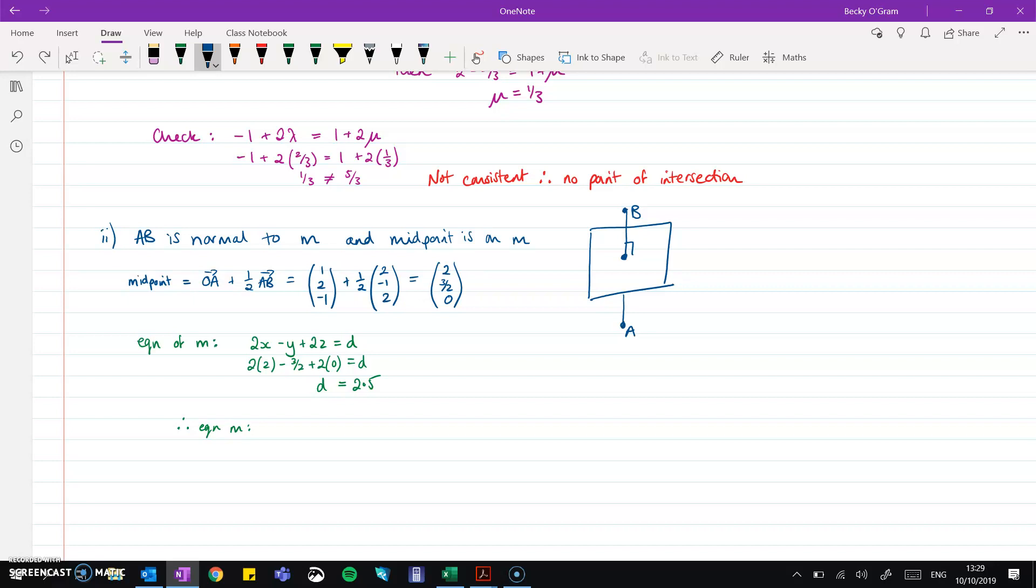Now plug that back into our equation of m. However, I'm just going to adjust it a little bit because we don't like to have decimals if possible, so I'm going to multiply everything up and make it twice as big. It says the same thing, it just is a little bit tidier. So instead of 2x minus y plus 2z, we've got 4x minus 2y plus 4z equals 5.